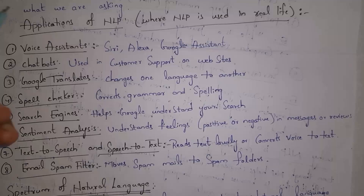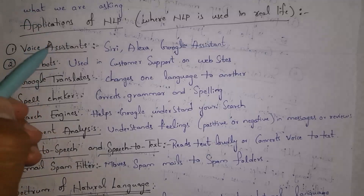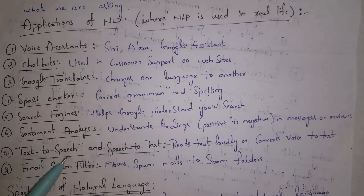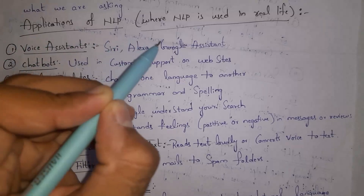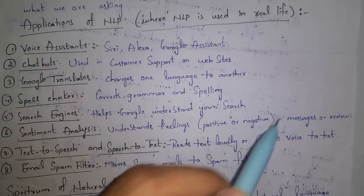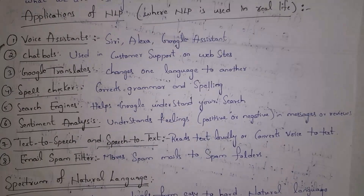Next I will explain applications of NLP, meaning where we use NLP in real life. We use NLP in voice assistants like Siri, Alexa, Google Assistant, etc. For example, if I open my iPhone and say 'Siri, call dad', then automatically Siri will call my dad. This happens because of NLP.